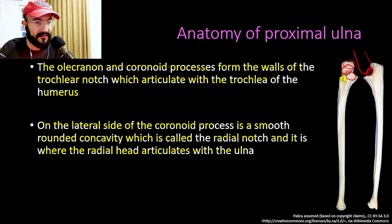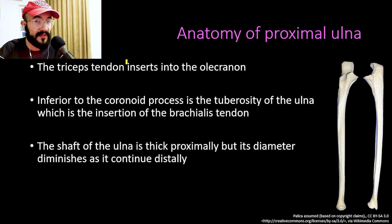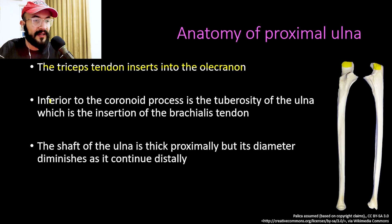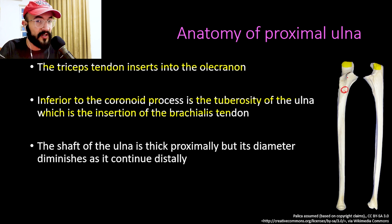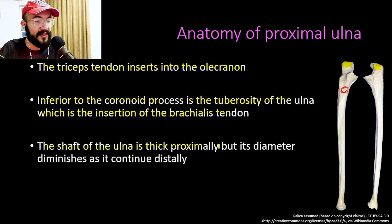On the lateral side of the coronoid process is a smooth rounded cavity called the radial notch, where the radial head articulates with the ulna. The triceps tendon inserts into the olecranon to help in elbow extension. Inferior to the coronoid process is the tuberosity of the ulna, which is the insertion of the brachialis tendon, helping in elbow flexion.